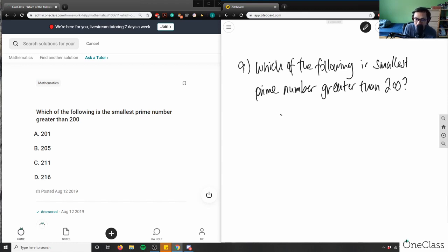We have A is 201, B is 205, C is 211, D is 216.